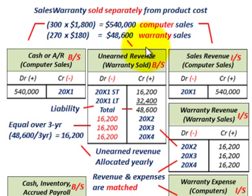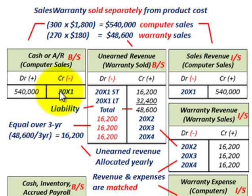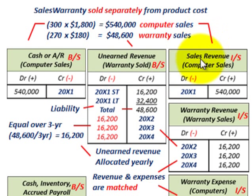Recording the computer sales at the end of 20x1: we debit cash or accounts receivable on the balance sheet for $540,000, and we credit sales revenue on the income statement for $540,000.